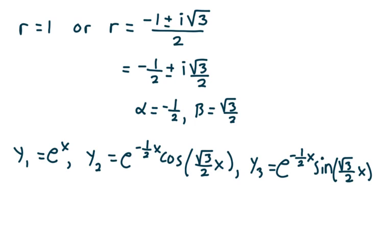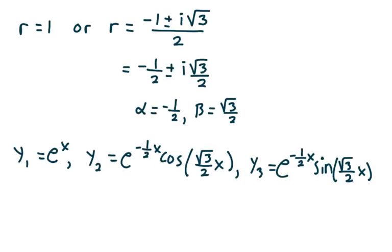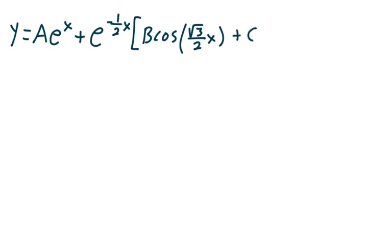Now I can write my general solution. y equals a e to the x, plus — factoring out e to the negative one-half x — multiplied by b cosine of square root of 3 over 2 times x, plus c times sine of square root of 3 over 2 times x. And that's how I express my general solution.